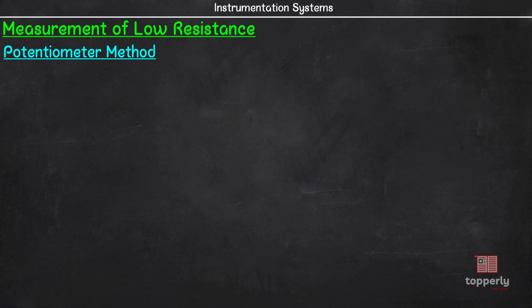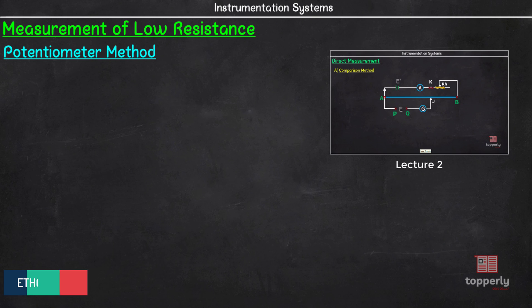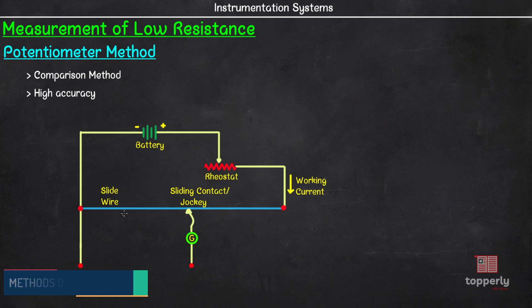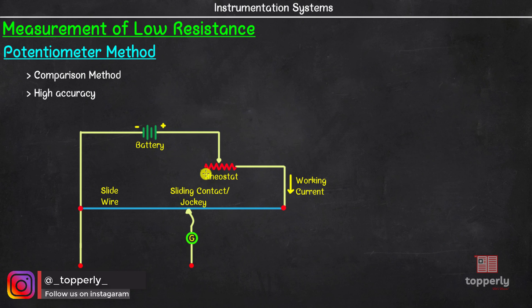To understand how to use the potentiometer method to measure low resistances, we should first understand what is the potentiometer method. As we have studied in lecture 2 of this lecture series, it is a comparison method with a high degree of accuracy. Here is the circuit diagram of a basic slidewire potentiometer. It consists of a battery, a rheostat, a slidewire, a galvanometer, and a sliding contact or jockey.